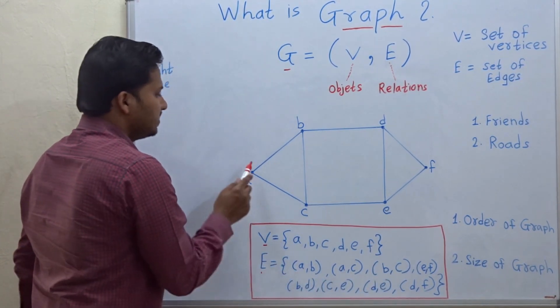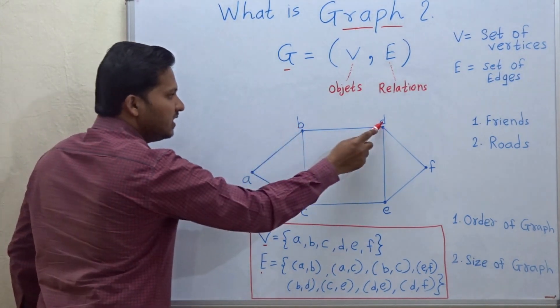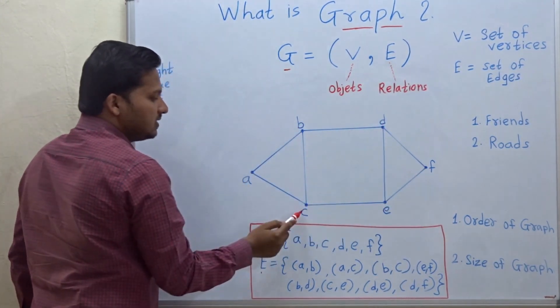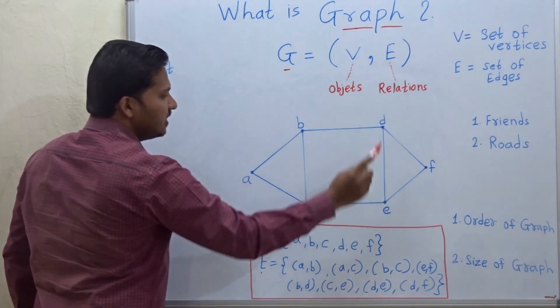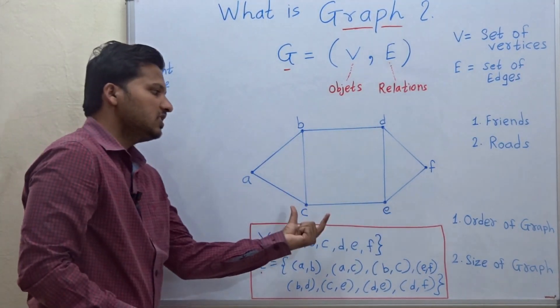Okay, so what are the edges? a, b, b, d, b, f, f, e, e, c, then a, c, b, c and d, e. So these are the edges in the graph.